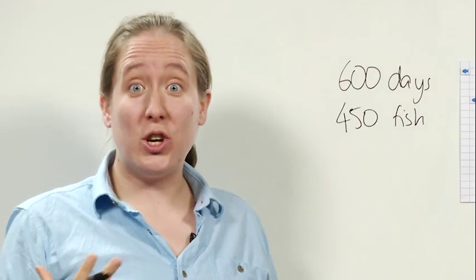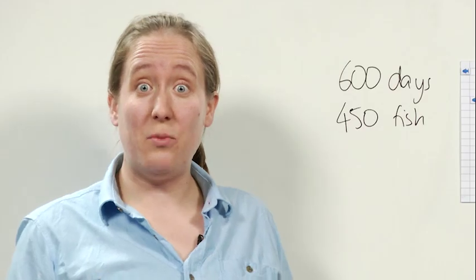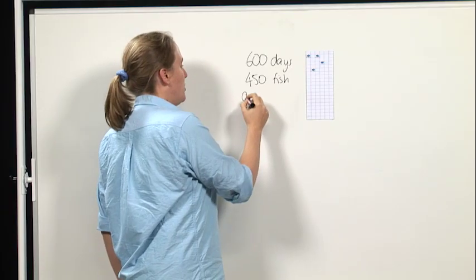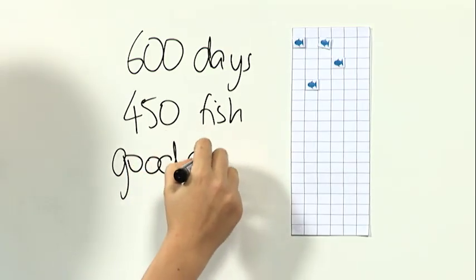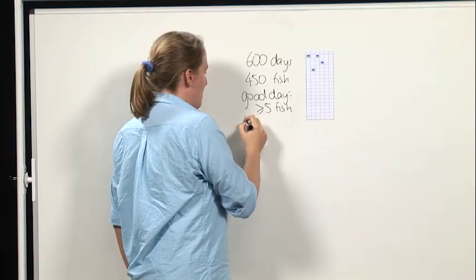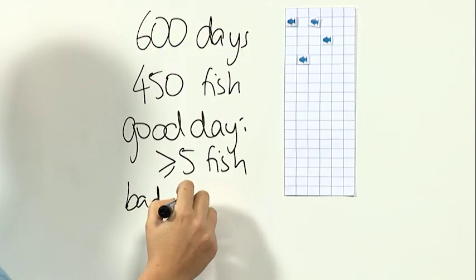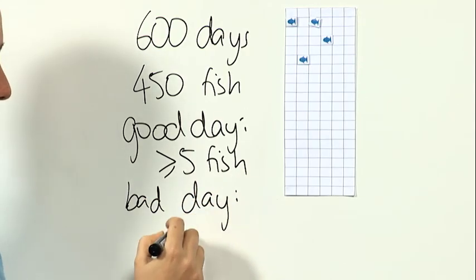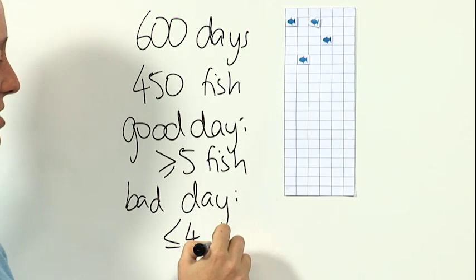Let's say that it's a good day when there are at least five people swimming. So for a good day we need at least five fish, and for a bad day we need at most four fish.